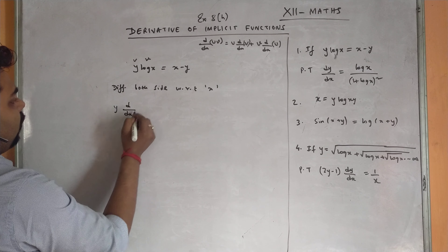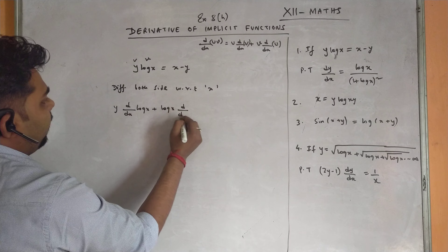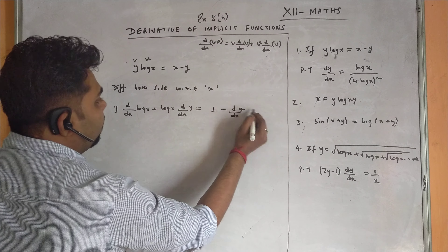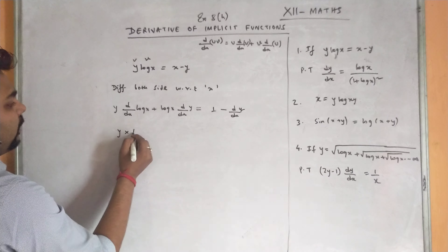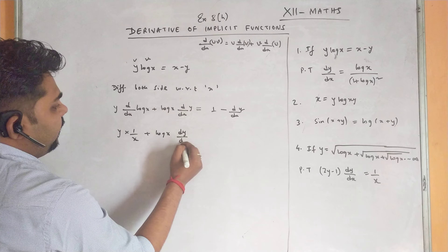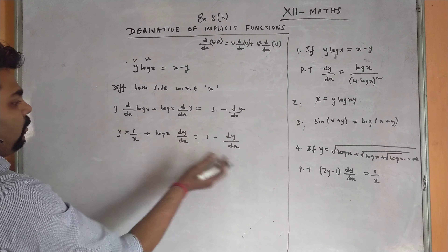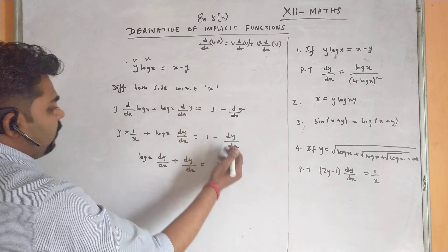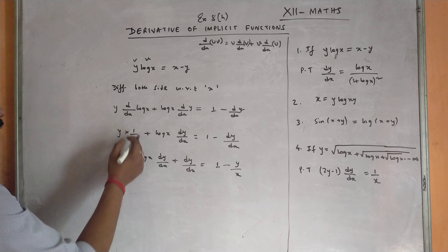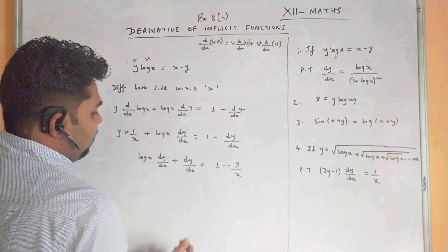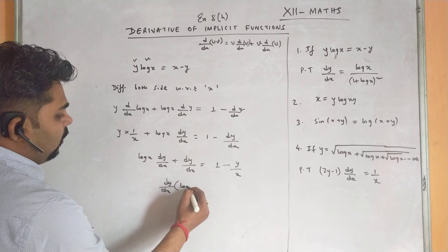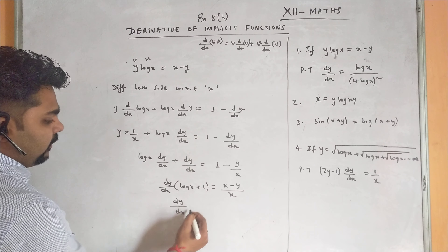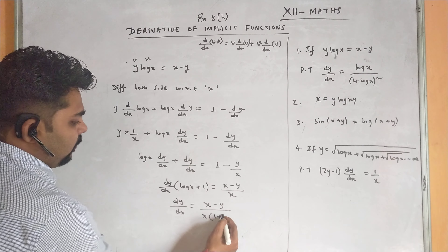Applying the UV rule: y·d/dx(log x) + log x·dy/dx = 1 - dy/dx. That gives y·(1/x) + log x·dy/dx = 1 - dy/dx. Taking dy/dx terms to one side: log x·dy/dx + dy/dx = 1 - y/x, so dy/dx·(log x + 1) = (x - y)/x, giving dy/dx = (x - y) / [x·(1 + log x)].